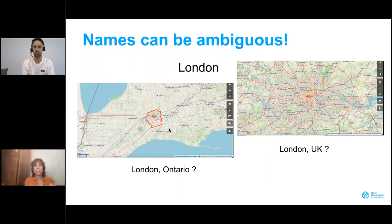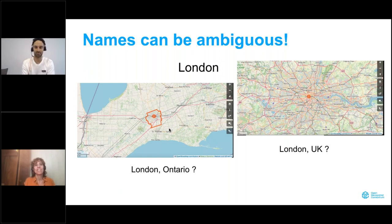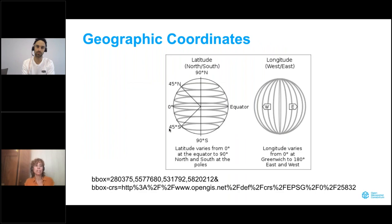Names can be ambiguous. For instance, if I say London, it could be interpreted as London in Ontario or London in the UK, which are very far away from each other. So ultimately, the only way that we have to locate something unambiguously on the surface of the Earth is to use a pair of geographic coordinates — latitude and longitude. This is the way that we can use to really be accurate when we want to locate something.